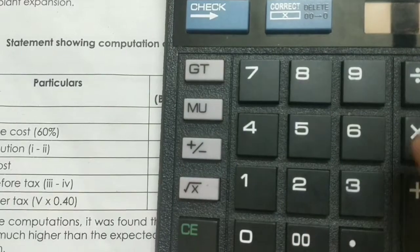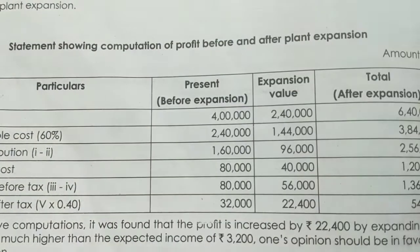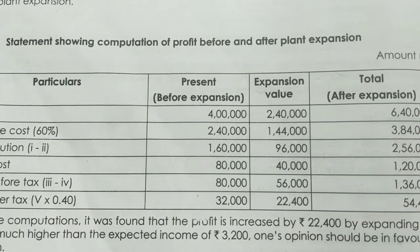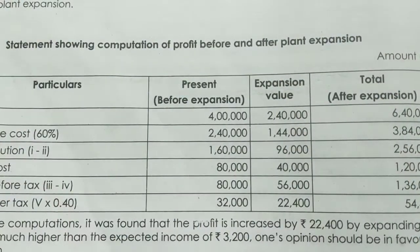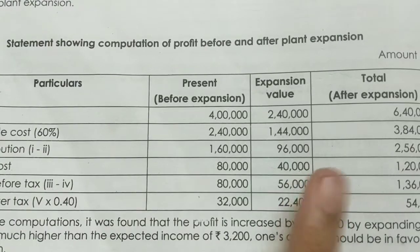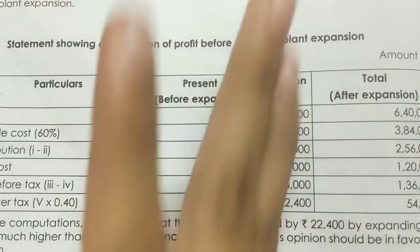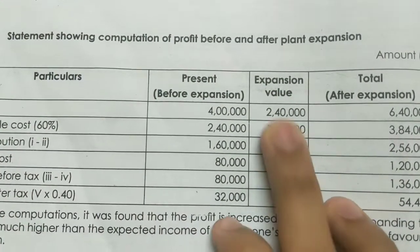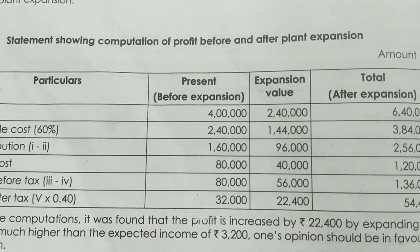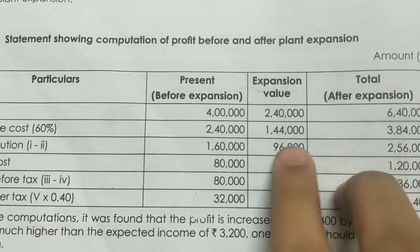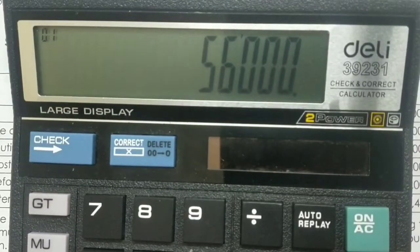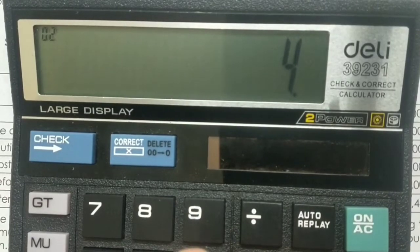That is 2,40,000 into 60% giving 1,44,000 sales contribution. We subtract 96,000 contribution and note the fixed cost as 36,000 extra. The expanded fixed cost is 40,000. Profit before tax is derived from contribution minus fixed cost of 40,000, giving us 56,000 before tax.